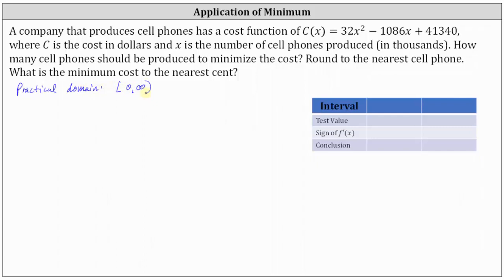Next, because we want to minimize the cost function, we will determine the critical numbers, which is where relative extrema will occur. Critical numbers are where the first derivative equals zero or is undefined. So let's determine c prime of x, which is the derivative of 32x squared minus 1,086x plus 41,340 with respect to x, giving us 64x minus 1,086.